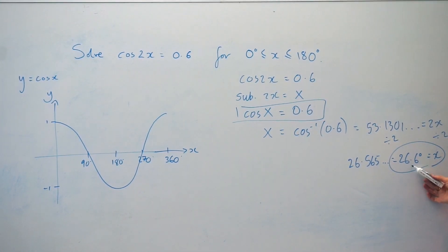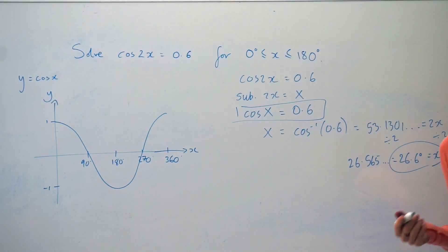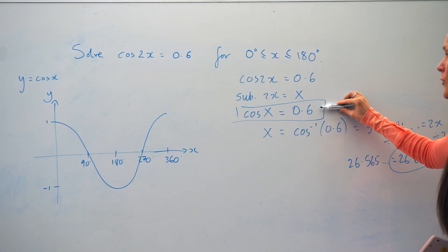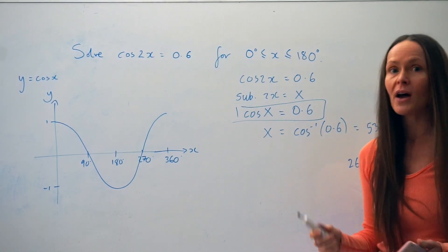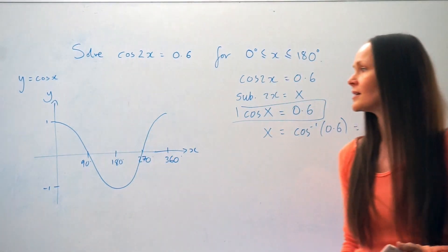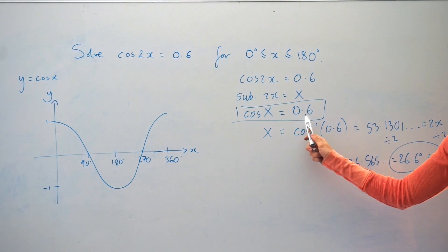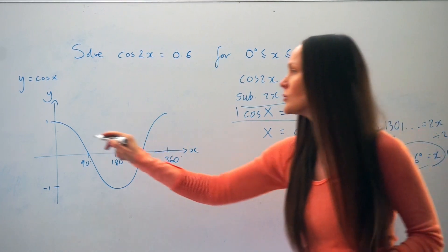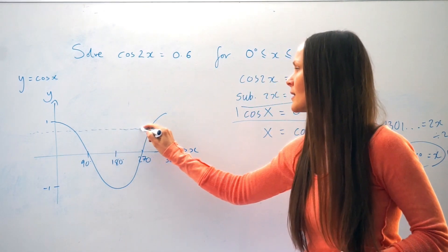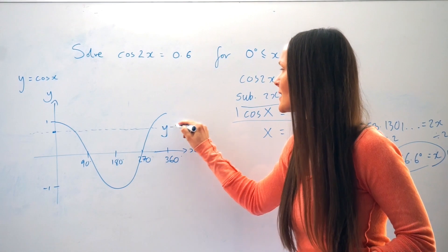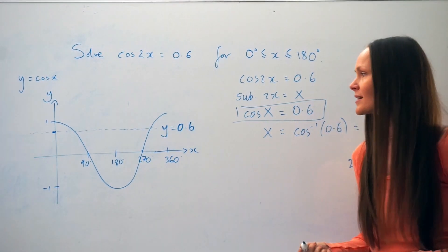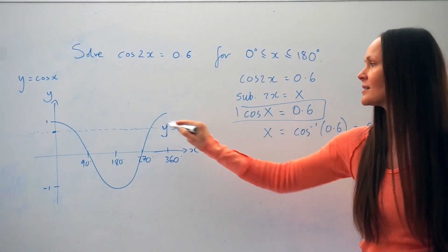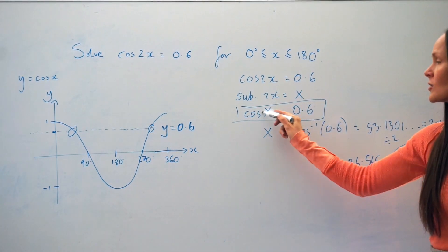That answer falls within the range of little x, so it's looking good. Now, to work out any other solutions, I want to take you back to the equation cosX = 0.6, the one that looks more familiar. The graph I drew at the beginning is y = cosX, and the y value has changed to 0.6. So I'm going to draw a horizontal line at approximately 0.6 — this is the line y = 0.6. Where this line intersects cosX gives me the solutions.